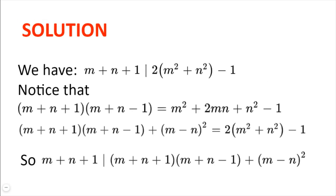So we have that m plus n plus 1 divides 2 multiplied by m squared plus n squared minus 1. Notice that m plus n plus 1 multiplied by m plus n minus 1 is equal to m plus n squared minus 1, which is m squared plus 2mn plus n squared minus 1. Now, if we add m squared minus 2mn plus n squared to this, we get 2 multiplied by m squared plus n squared minus 1.